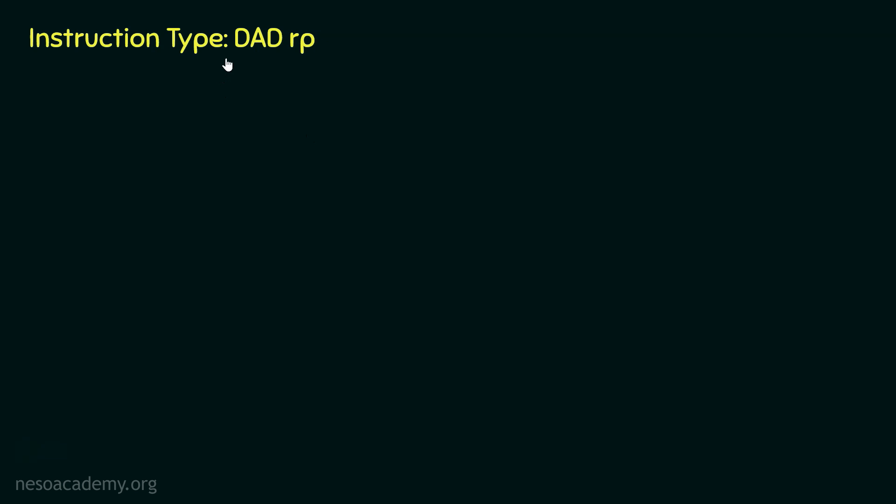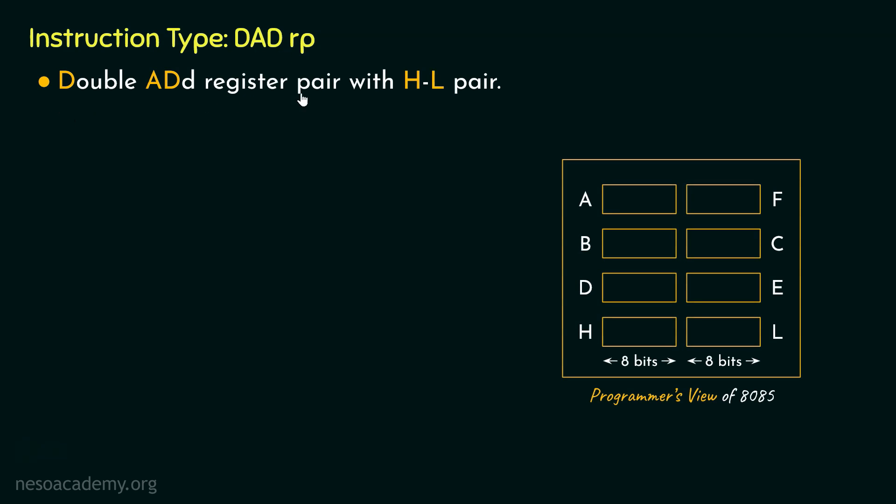Now the instruction type DADrp, here the mnemonic DAD stands for Double ADD Register Pair with HL pair. So we are talking about all the register pairs B, C, D, E, and H, L. If we want to add two 16-bit numbers, one of the operands of 16 bits can stay in any of these register pairs. However, another operand must reside inside the HL register pair, and by the end of the addition, the result will also be stored within the HL register pair itself.